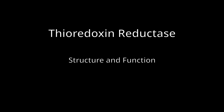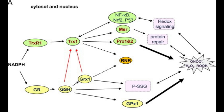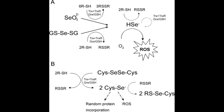The thioredoxin system is a major reduction-oxidation pathway in cells involved in the regeneration of many antioxidant compounds. It plays important roles in the cell's defense against reactive oxygen species and in the regulation of apoptosis. The system consists of the proteins thioredoxin and thioredoxin reductase. Although thioredoxin is the main substrate of thioredoxin reductase, the enzyme can also catalyze the reduction of many other substrates, including selenite and hydrogen peroxide.